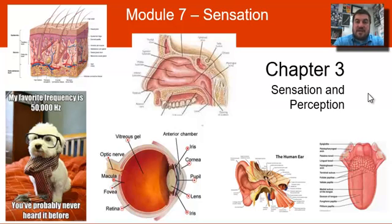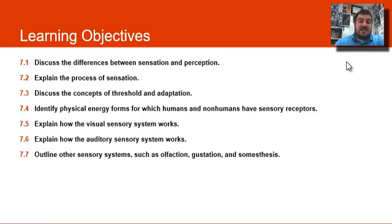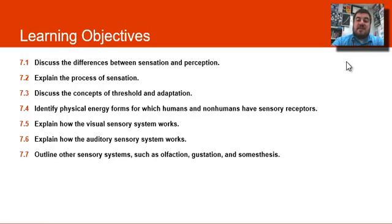Hi, and welcome back to Psychology with me, Mr. Snyder. Today we're going to delve into the second half of Domain 2 and talk about Chapter 3, which is Sensation and Perception. Today we're going to focus on sensation. Learning targets are to talk about the differences between sensation and perception, the process of sensation, the concepts of threshold and adaptation, the physical energy forms for which we have sensory receptors, and our visual sensory system.